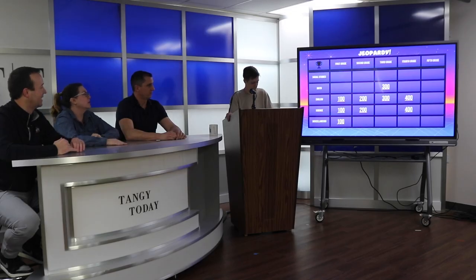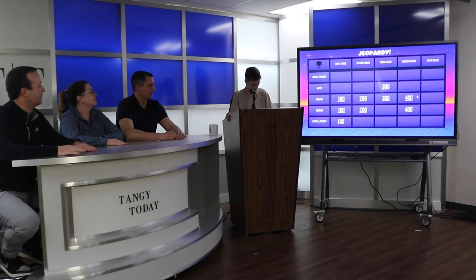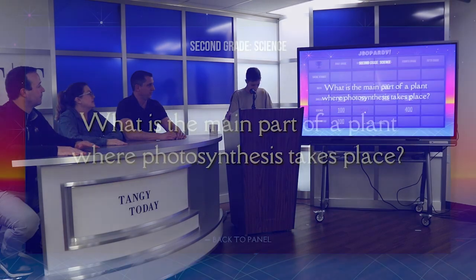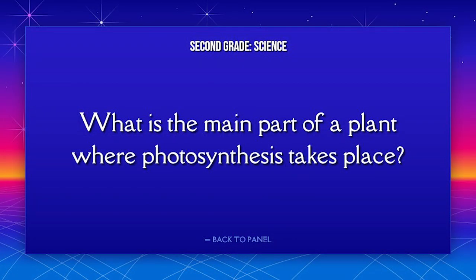Let's do science 200. What is the main part of the plant where photosynthesis takes place? The leaves. That is correct.